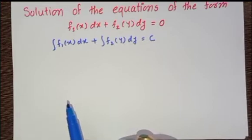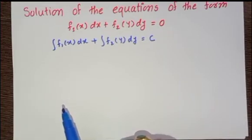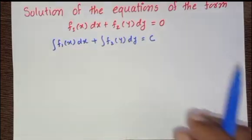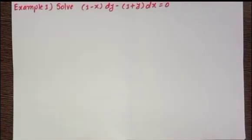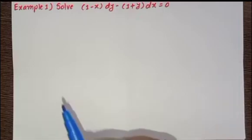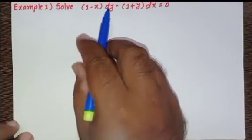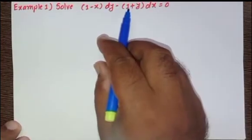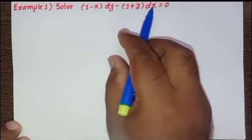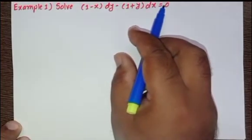We will take examples one by one to get a clear idea. The first example is: solve (1 - x)dy - (1 + y)dx = 0.